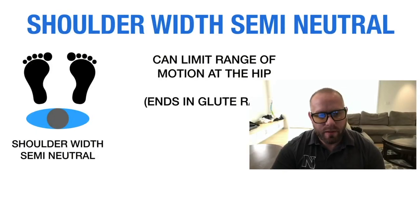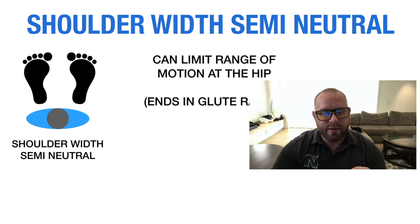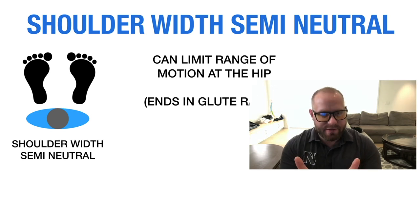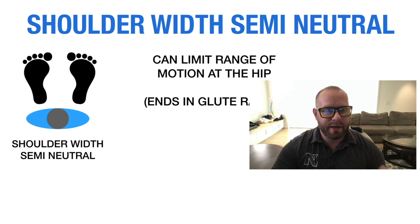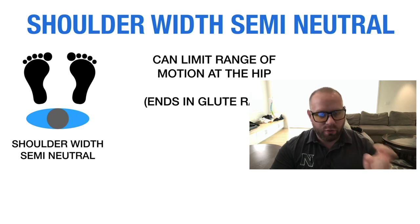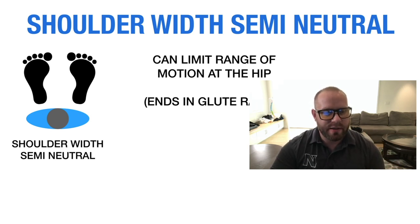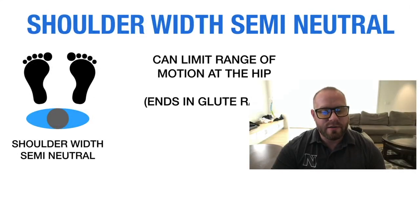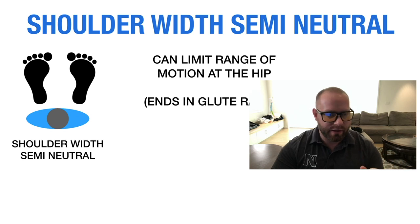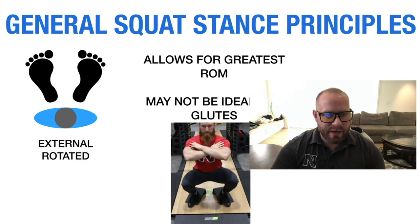The shoulder-width semi-neutral stance can limit range of motion at the hip for people whose hips need to go wider. We want feet and thighs going in essentially the same plane at the bottom. Some people can achieve a quad dominant squat in this stance, though not necessarily full depth. This stance does end in the glute range — the lengthened position for challenging the glutes is closer to shoulder-width. As we open the stance it shifts toward adductor dominance.